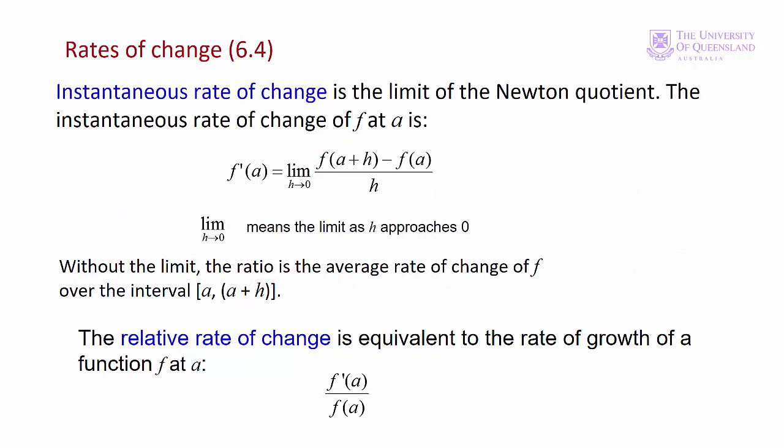First derivatives tell us how functions change with respect to changes in the variable. Going back to the Newton quotient, the first derivative is the rate of change of the function at point a. If we leave out the limit, then the ratio [f(a + h) - f(a)] / h — where h is not approaching zero — is the average rate of change of the function over that interval. You might also come across the relative rate of change, which is the quotient f'(a) / f(a), often expressed as the growth rate of the function at a. This is also known as the proportional rate of change and is common in economics, usually expressed as a percentage change.